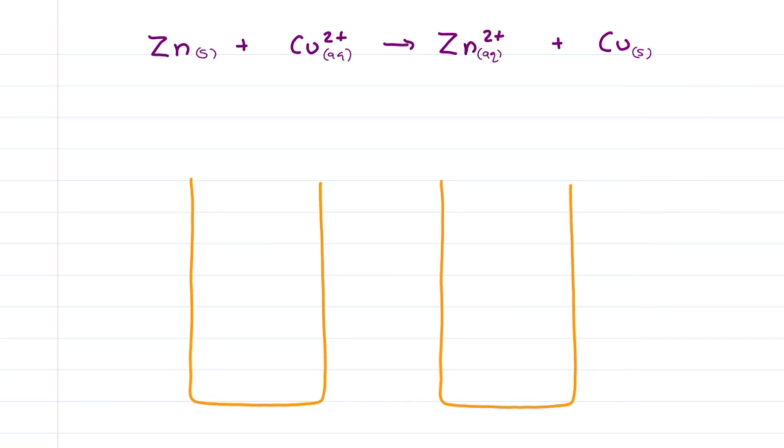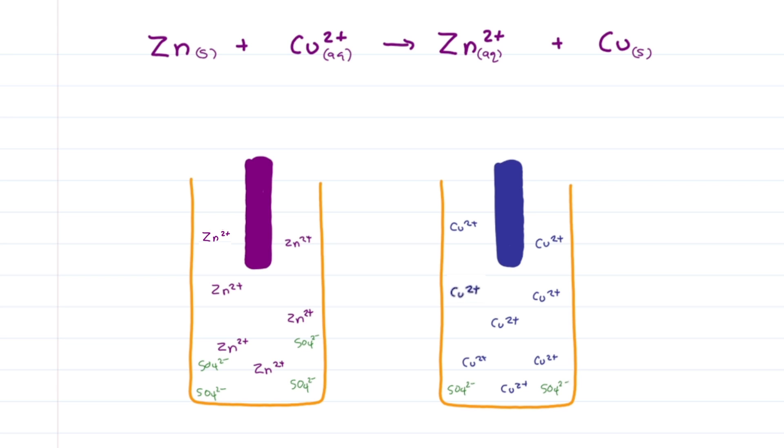But if you separate the two half reactions and force the electrons to flow over a wire, now you can capture the electrical energy to power a light bulb or your cell phone. As I teach in my galvanic cell video, we place each half reaction into a half cell container, along with a solid metal electrode. Here we'll use zinc sulfate and copper sulfate, where sulfate is a spectator ion that we're going to ignore.